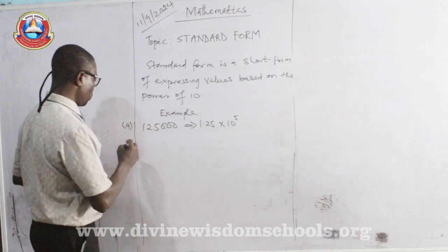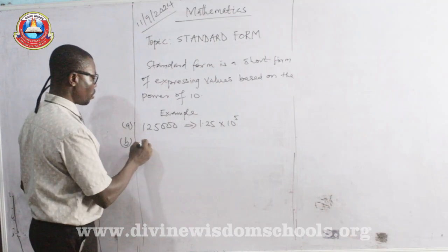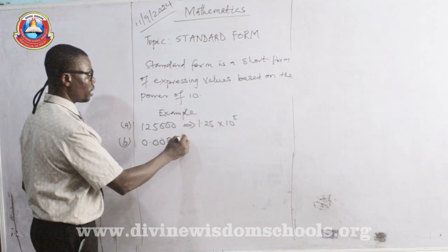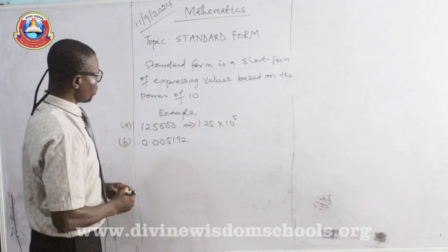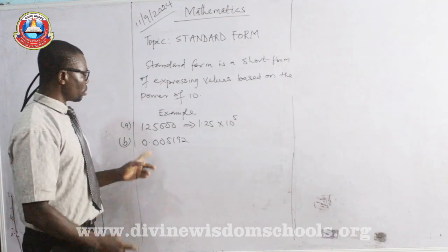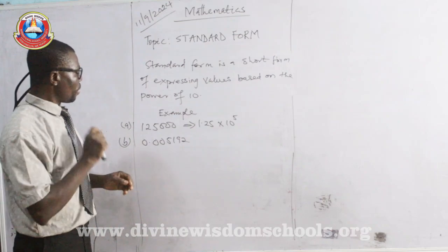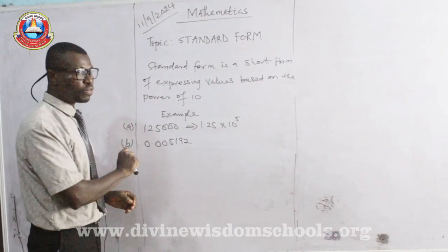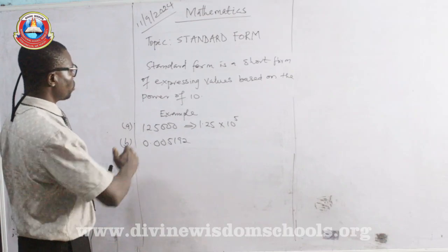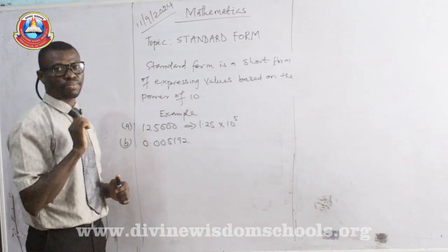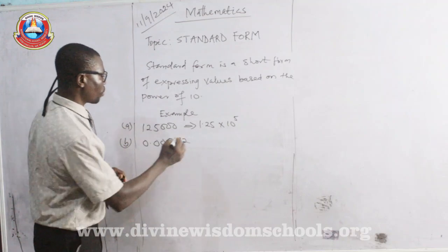Let's consider that also. We have something like this. This is 0.005192. This time around, you have your decimal point here. That is the first thing you do. Locate where you have your decimal point. But this time, we are shifting decimal point from the left-hand side to the right-hand side. Therefore, the power of 10 will be negative. Let's do that now, together.